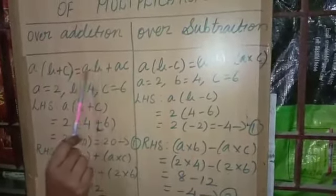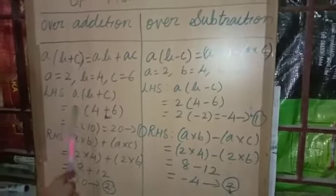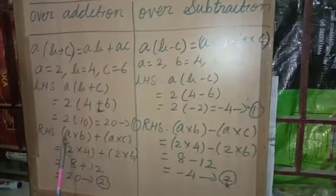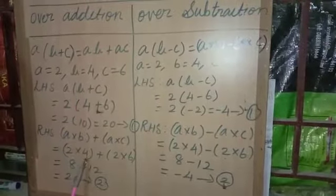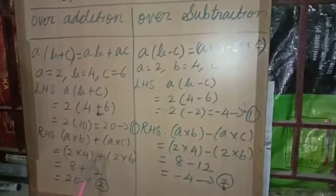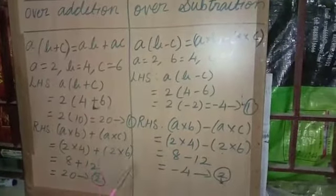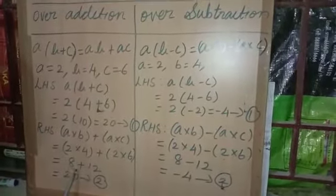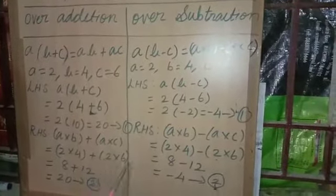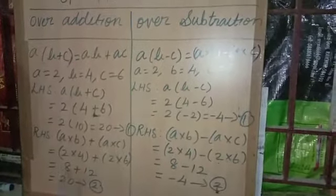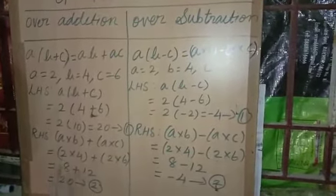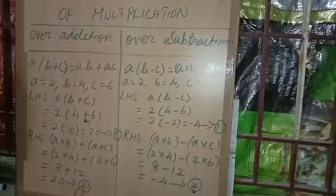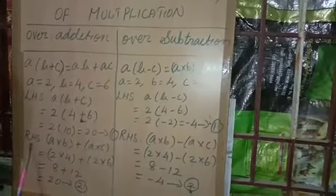Now we have to check RHS. RHS is AB plus AC. That means we multiply A with B, then multiply A with C, and finally add. Instead of A: 2, instead of B: 4, then plus, and the product of A and C where A is 2 and C is 6. 2 fours are 8, plus 2 sixes are 12. Both numbers have plus symbol, so we add. 8 plus 12 is equal to 20. LHS we got 20, RHS also we got 20.